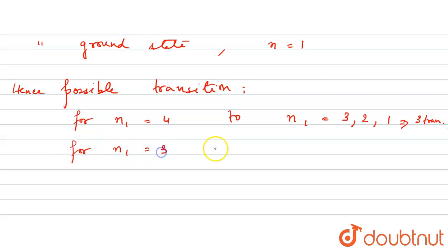For n1 equals to 2 to ground state, one transition. Now total how many transitions in these three steps? Addition of all transitions.